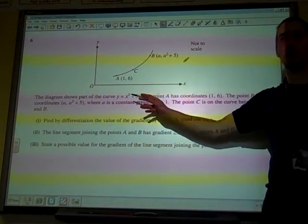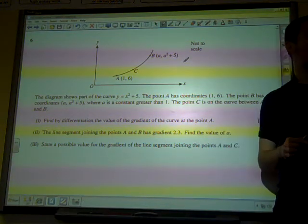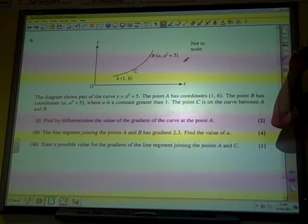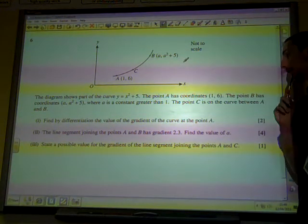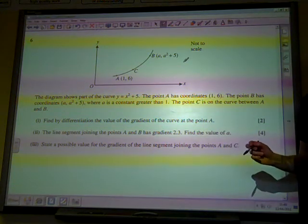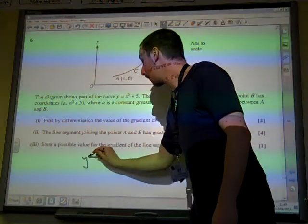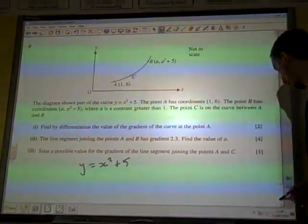The diagram shows part of the curve y = x² + 5. You're given the coordinates of one of the points and there's another point. Part (i) asks: find by differentiating the value of the gradient of the curve at point A. This should be quite straightforward. They just want you to show that you can take y = x² + 5 and differentiate it.